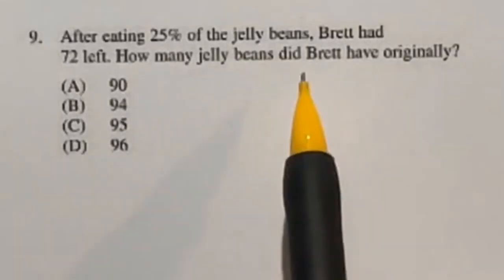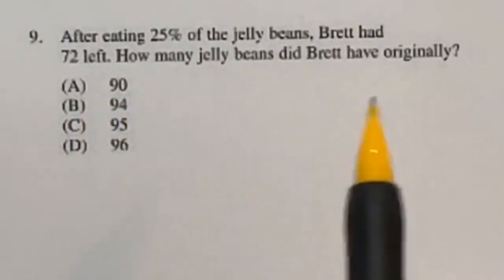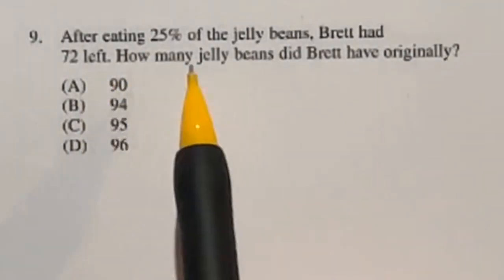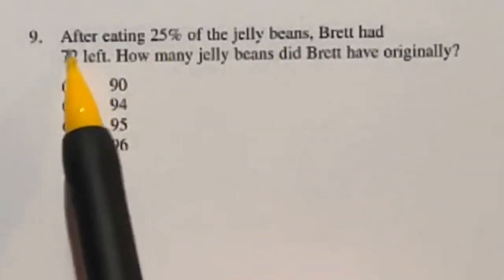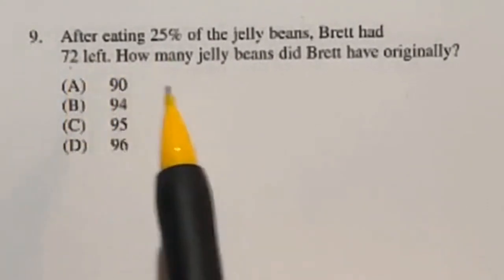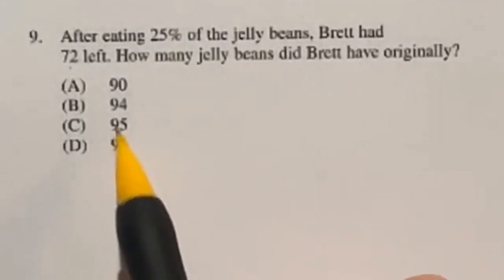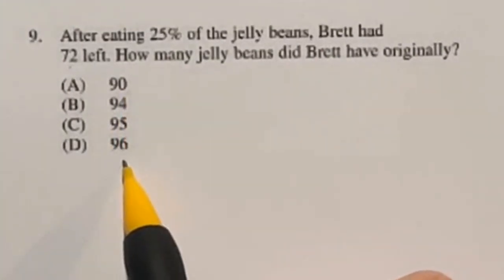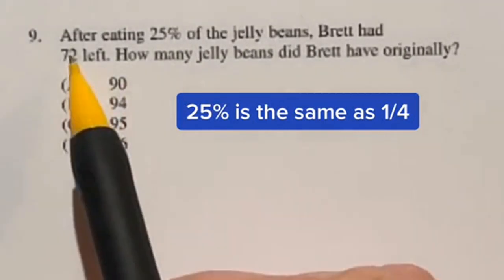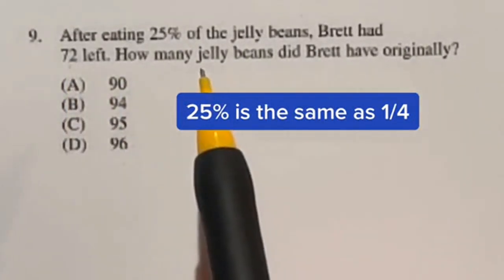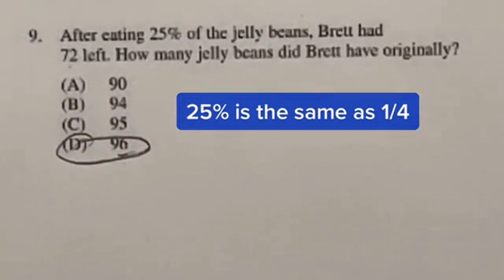After eating 25% of the jelly beans, Brett had 72 left. How many did Brett have originally? So typically what I would do here is working backwards and knowing that 25% is used, that means that this is 75% of the original. 72 divided by 0.75 gives the answer, but we don't have a calculator here. So instead, I see that all of these are whole numbers. So that means that I know my answer has to be divisible by 4 in order to go right here. While knowing that 100 is divisible by 4 and this is 4 away from it, our answer must be D, 96.